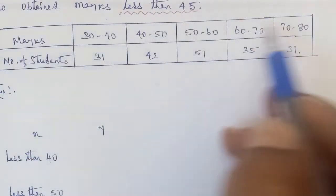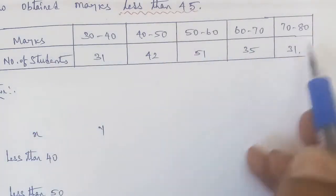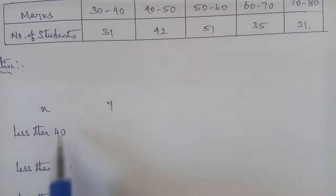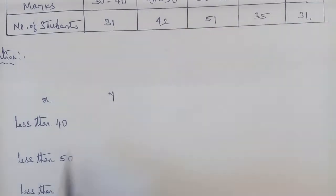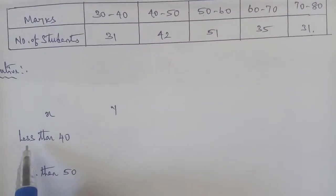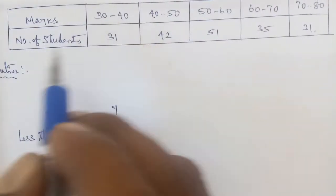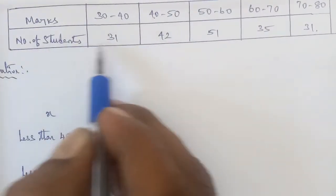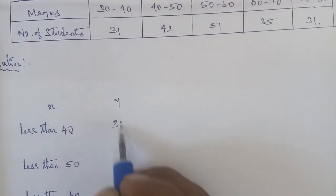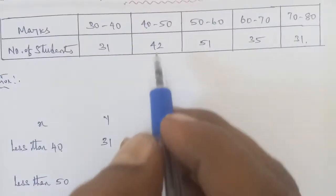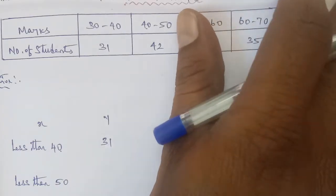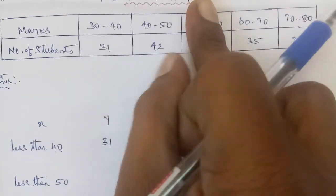The next term is class interval. We set up class intervals as x data and cumulative frequency as y data. So less than 40 is x data, and y data starts: less than 40 has 31 students, so we enter less than 40 with y = 31. For less than 50, we have 31 and 42.